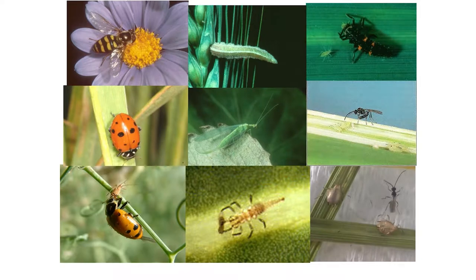Here are the natural enemies that attack aphids: syrphid adults and larvae on the top left and middle, ladybug larvae and adults top right, lacewings in the center — the adult and larvae — and parasitic wasps. These are all good critters that we attempt to preserve when managing aphids.